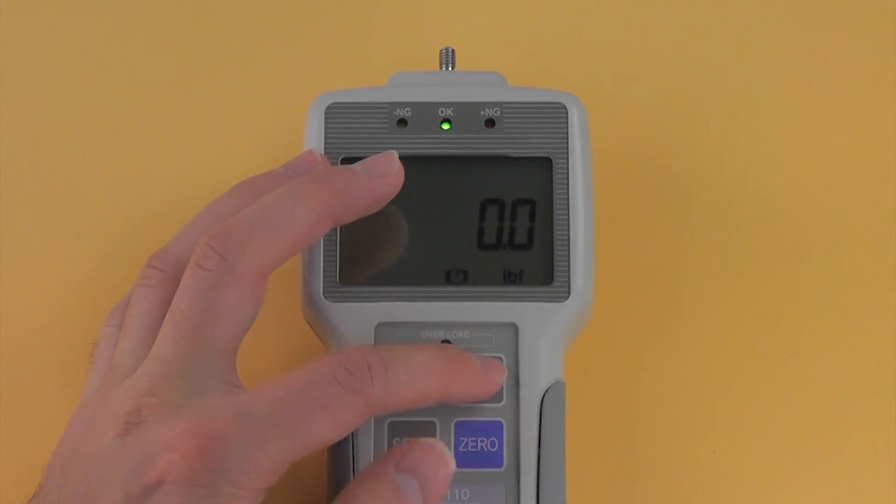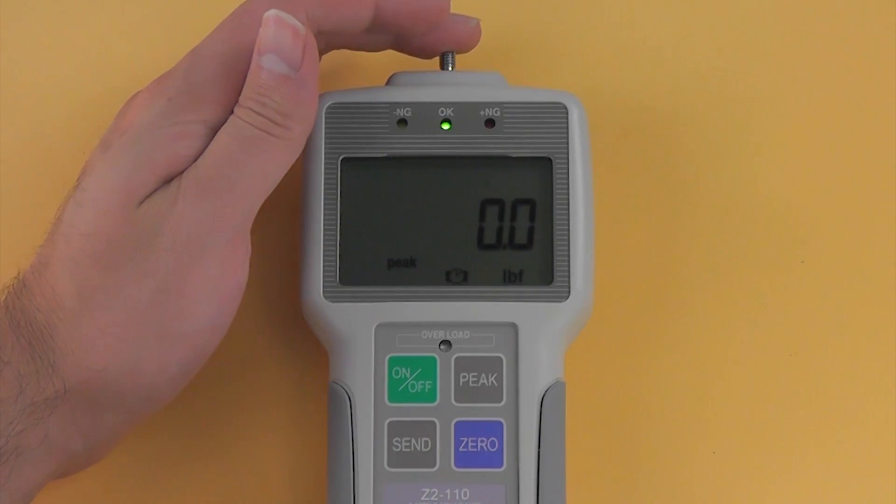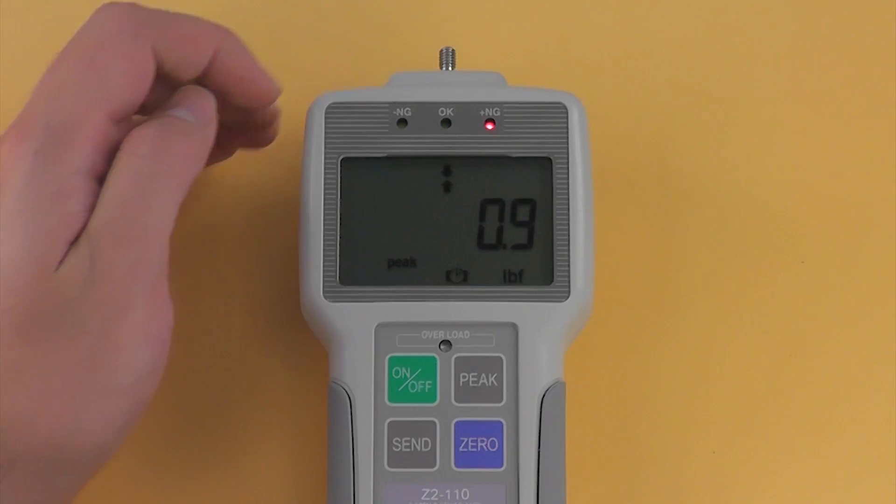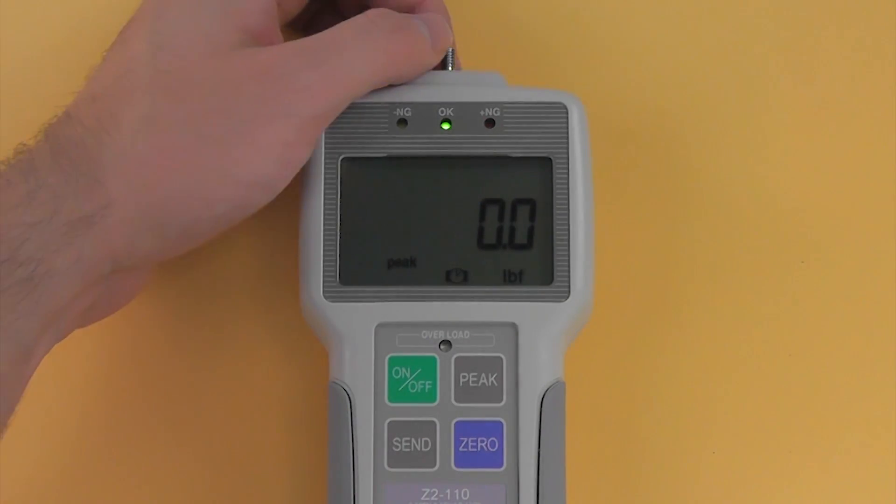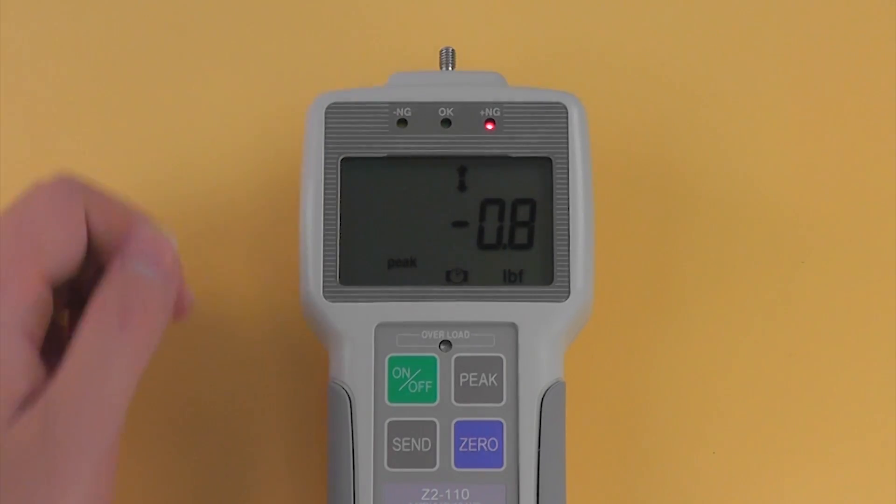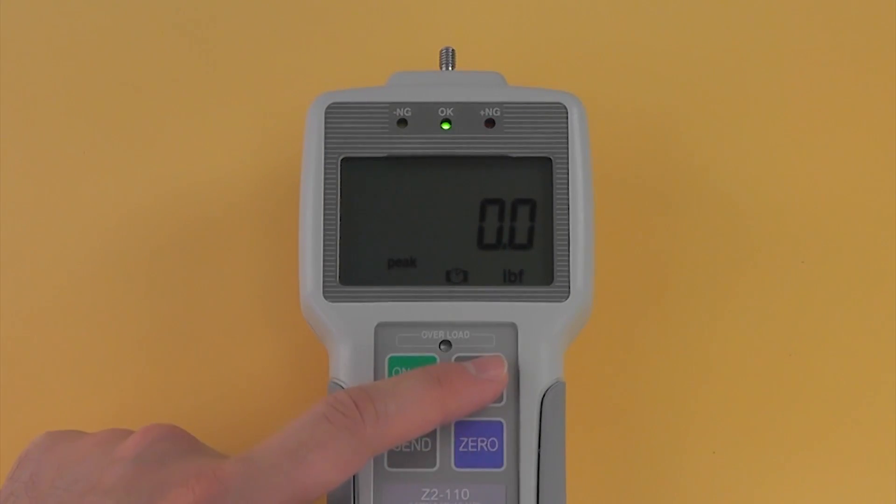For a peak measurement, press peak. Notice that peak appears on the display. Peak values will not change until a higher value is measured. Press peak again to enter real-time mode.